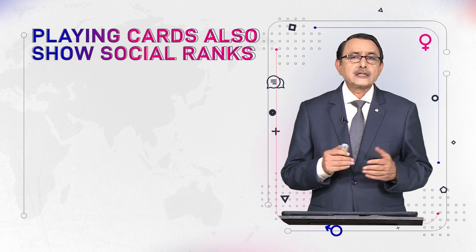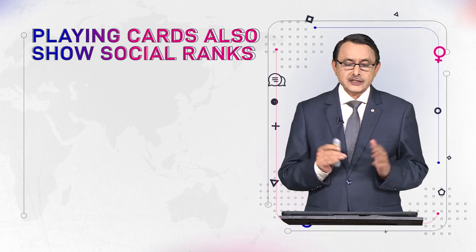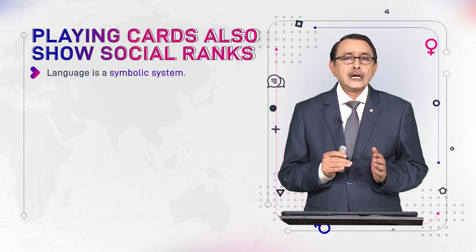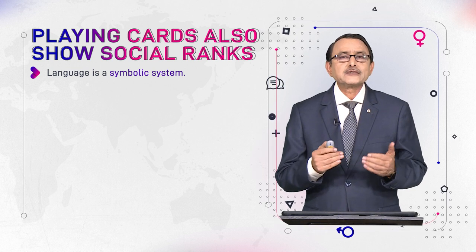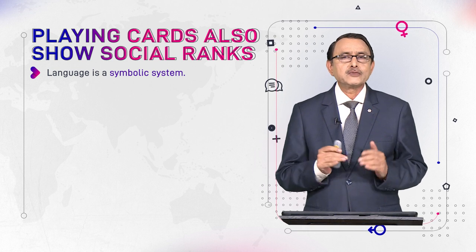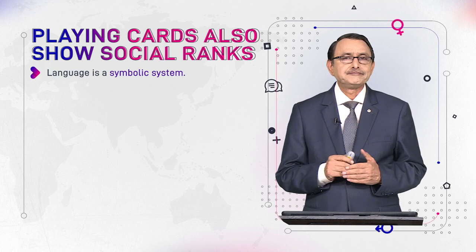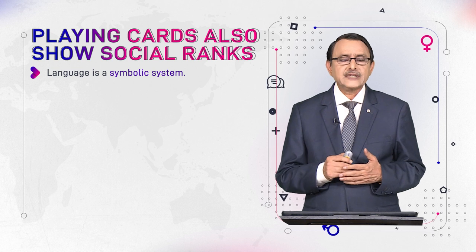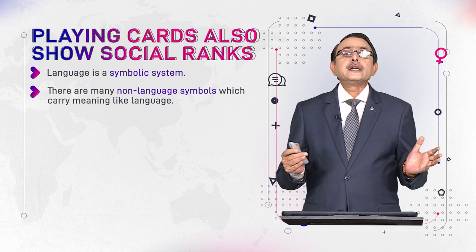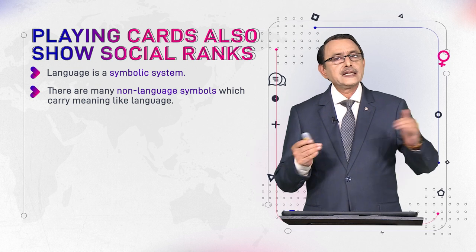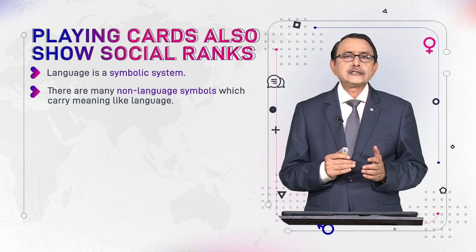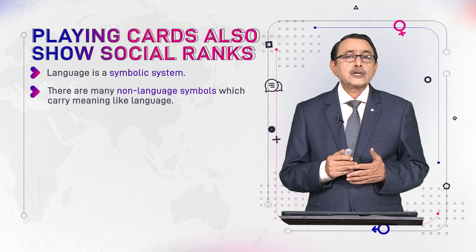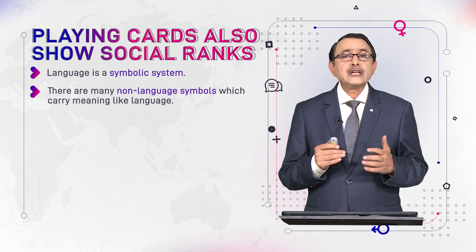I would show you playing cards, so a few words on playing cards first. Language is a symbolic system — a symbol is something that refers to something and it has no direct link with the object itself. For example, a dove is a symbol of peace, the flag of a nation is a symbol of unity and autonomy. There are many non-language symbols which carry meaning like language.